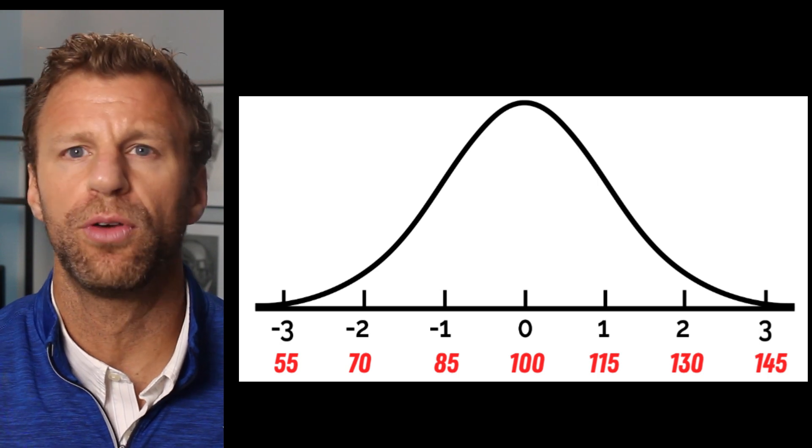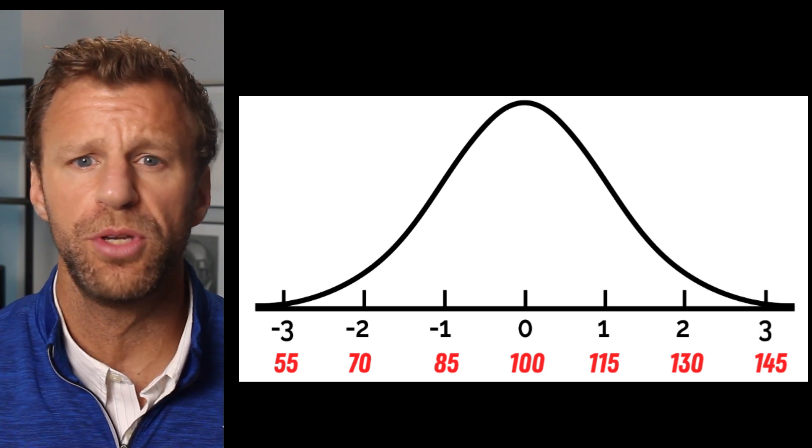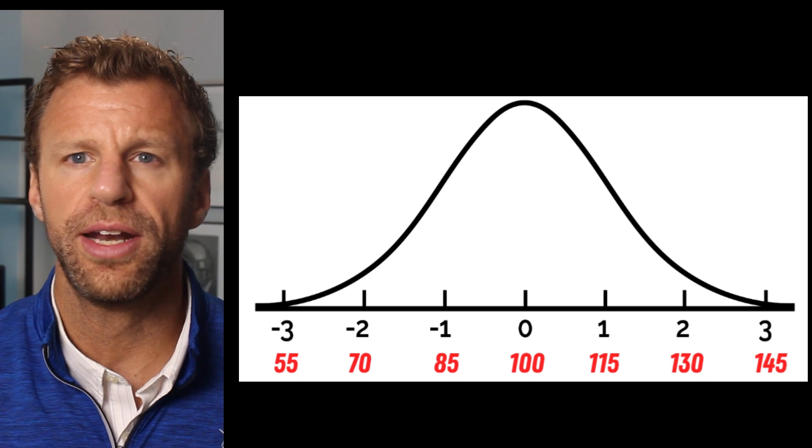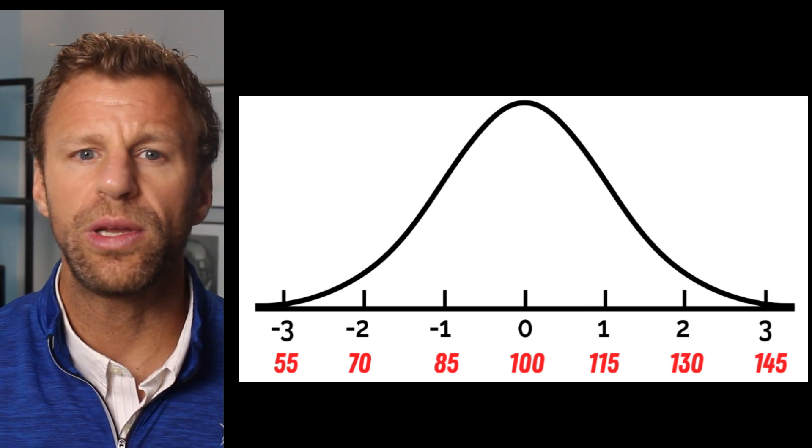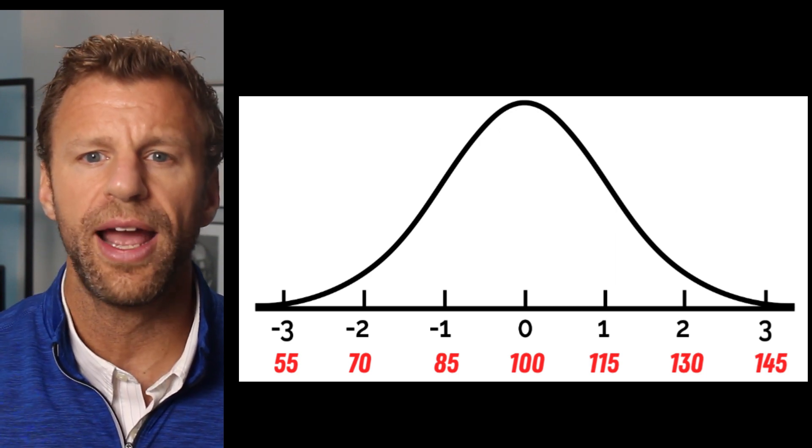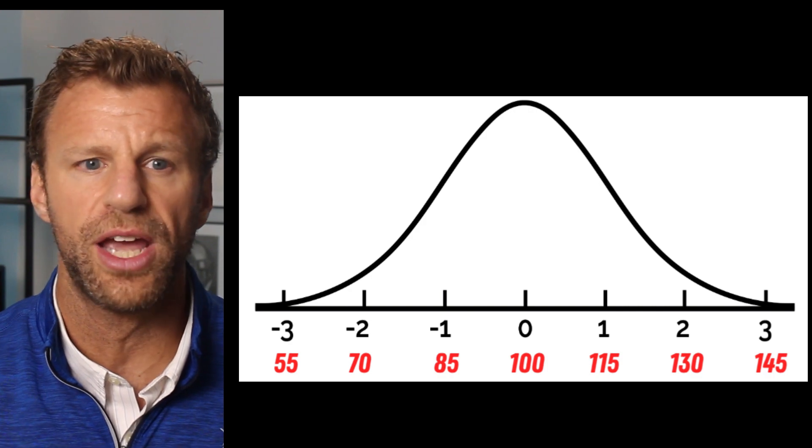Drawing a normal curve is really easy. We already know the shape and all we need to know is the mean and standard deviation. IQ scores of humans are a great example of quantitative data that follows a normal distribution. They have a mean of 100 and a standard deviation of 15. We label the mean in the middle with 100 and then we go up and down one standard deviation at a time.